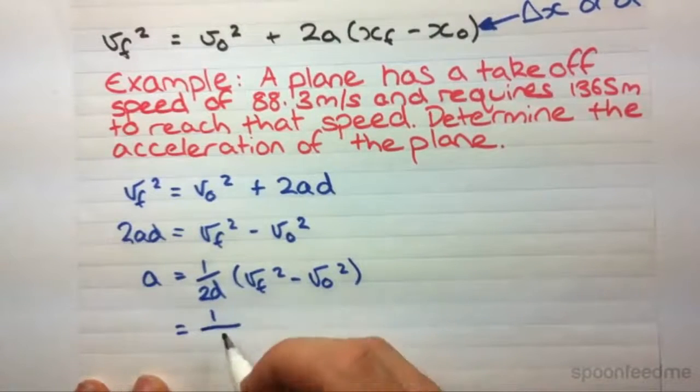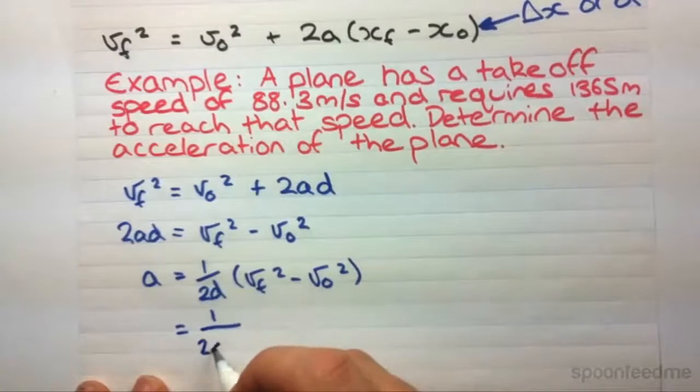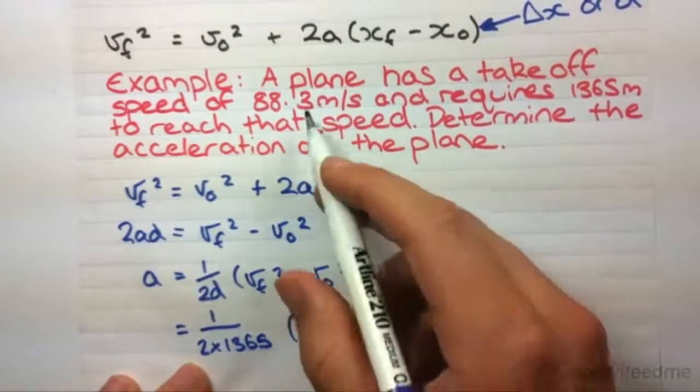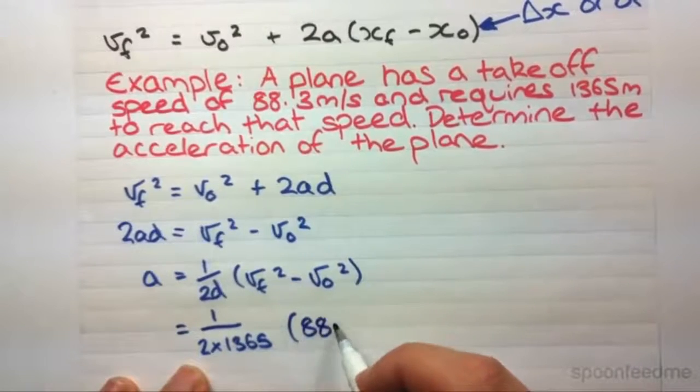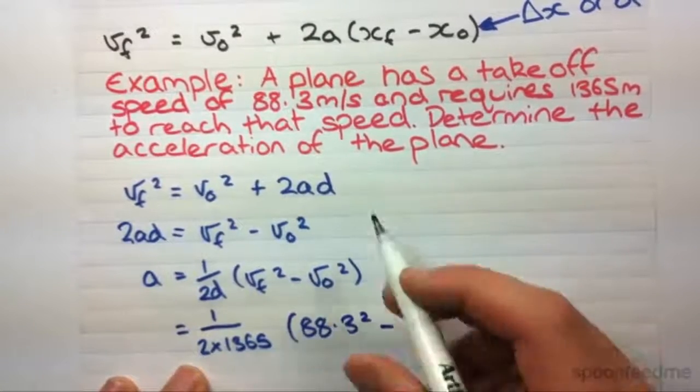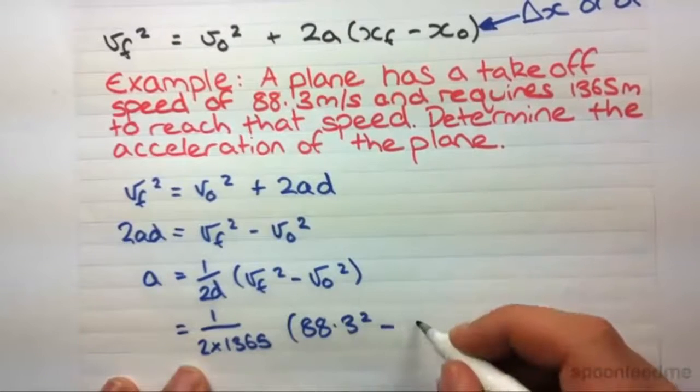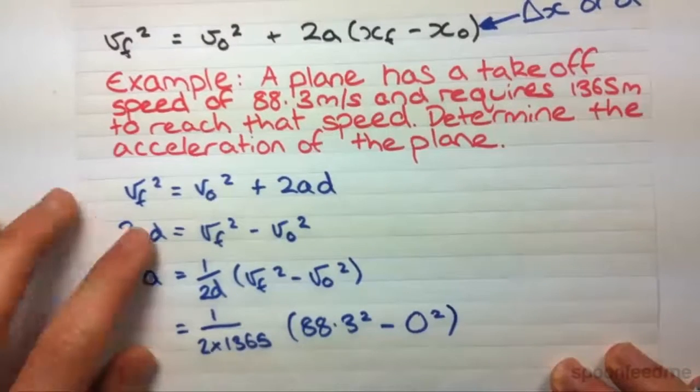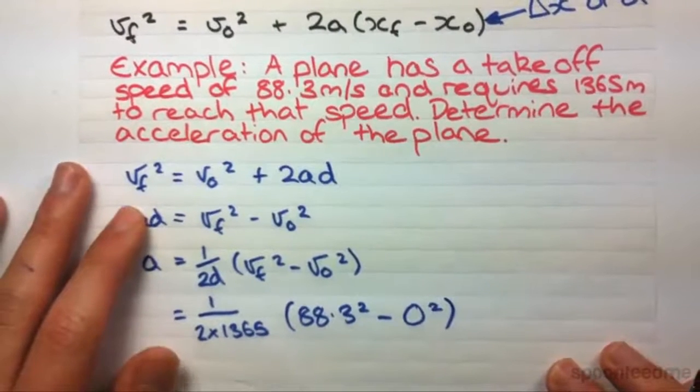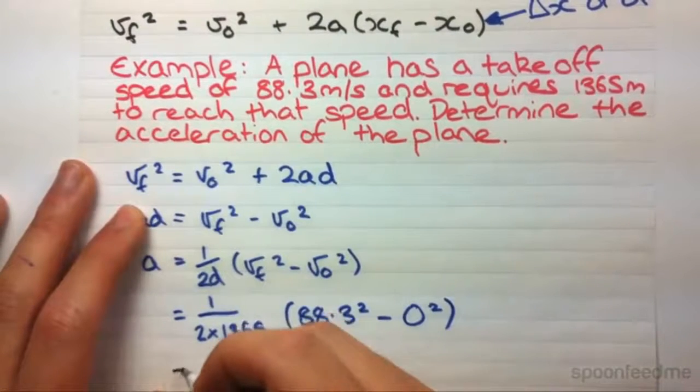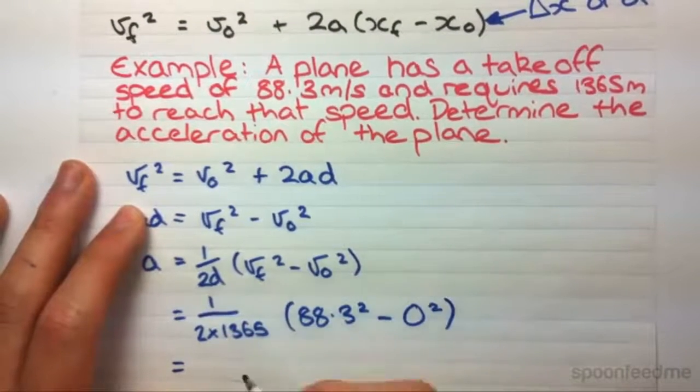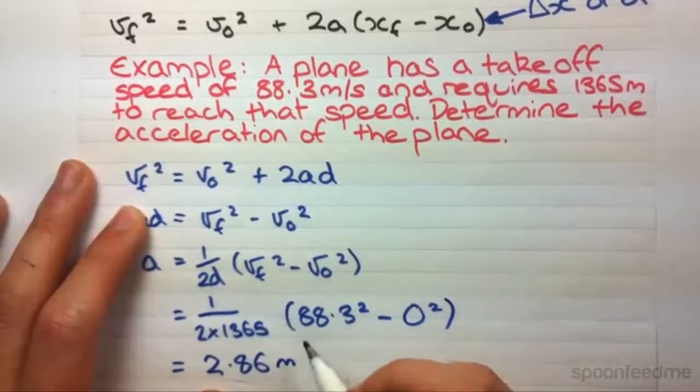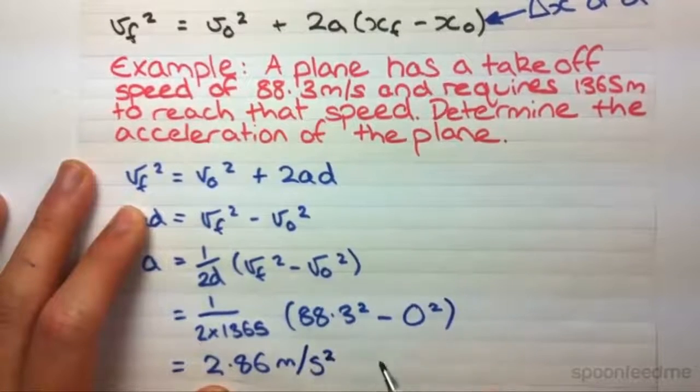1 over 2 times 1365 because that's our distance, times Vf 88.3 squared minus V0. It starts from rest, I guess. It doesn't actually say that. We can just assume that. So, that is the math we need. Now, chuck that into the calculator. I actually end up with 2.86 meters per second squared.